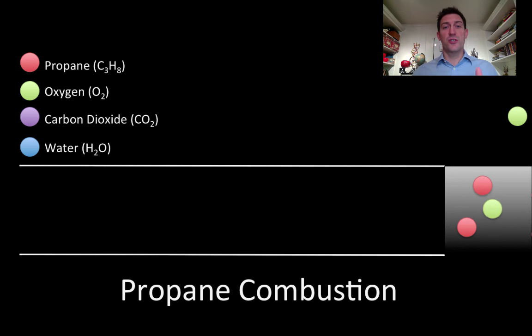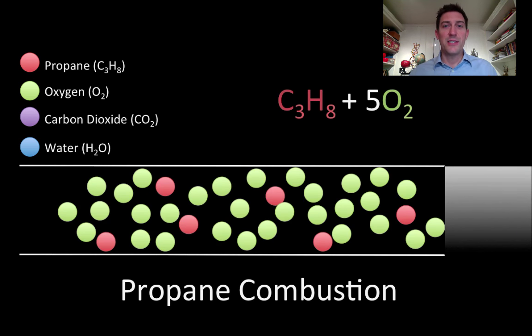But it also mixes oxygen in with it so that it can make this combustion reaction happen very easily. And so what we get is a tube filled up with propane and with oxygen. And then when you pull the trigger all the way in you get a little spark and that spark starts to consume up the propane and the oxygen through a combustion reaction.